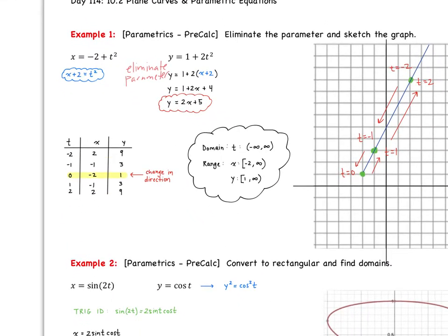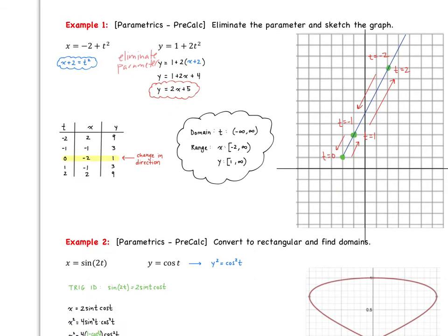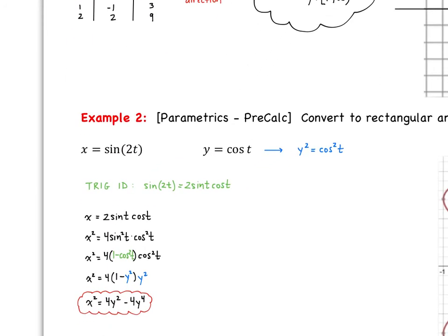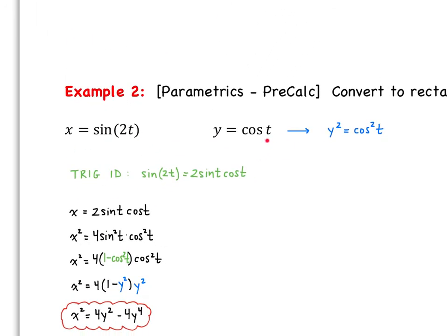Now let's take a look at the next example — still pre-calculus review. We're going to convert to rectangular and find the domain and range. We still have x and y in terms of t. When I see trig functions, I'm thinking trig identities. I see sine of 2t, which is really 2 sine t cosine t. So we rewrite x in terms of that. Then it's going to help if we square both sides — square the left, square the right — and that's going to come into play later.